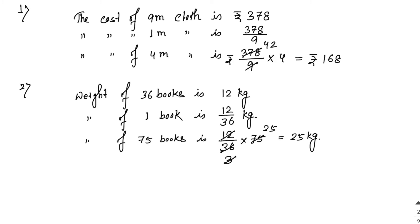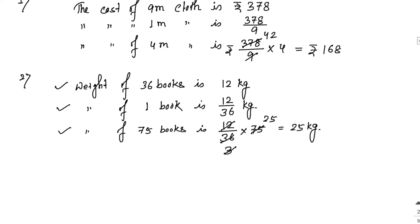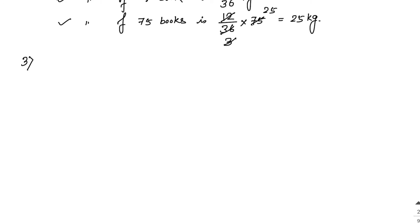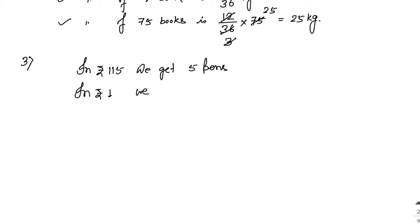Remember: in every unitary method problem there are three lines — first line is what is given, second line is always the unit line, and third line is what is required. Sum number 3: five pens cost rupees 115; how many pens can you buy for rupees 207? The required quantity is number of pens, so keep that on the right side. Write: in rupees 115 we get five pens.